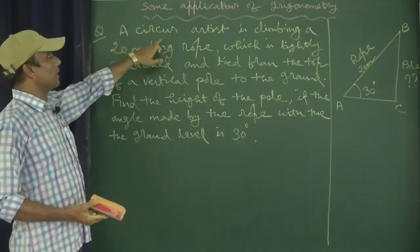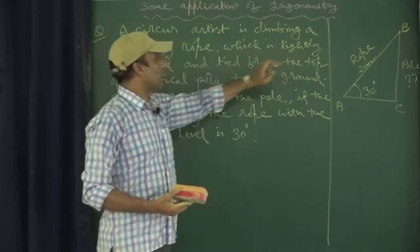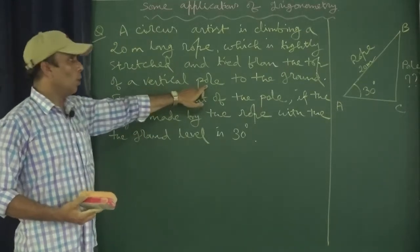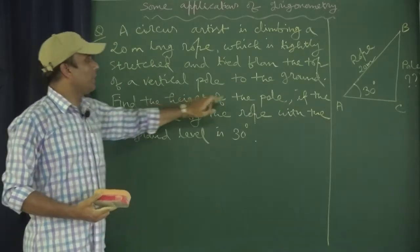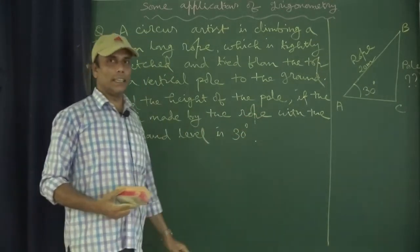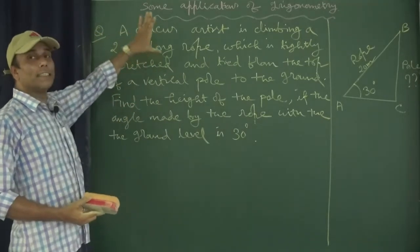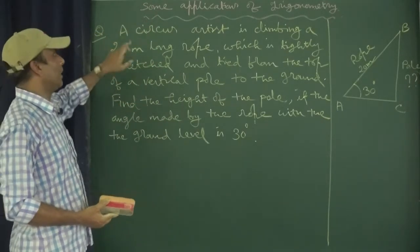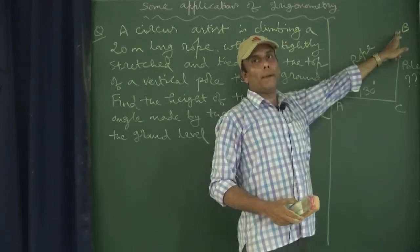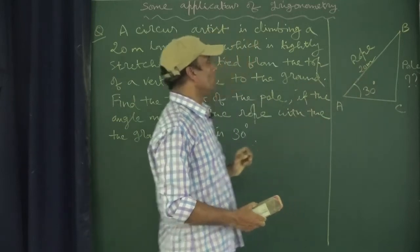Our question is: a circus artist is climbing a 20 meter long rope, which is tightly stretched and tied from the top of a vertical pole to the ground. We have taken a rope AB. AB is a rope and its length is 20 meters.